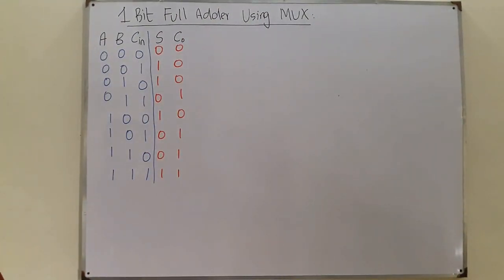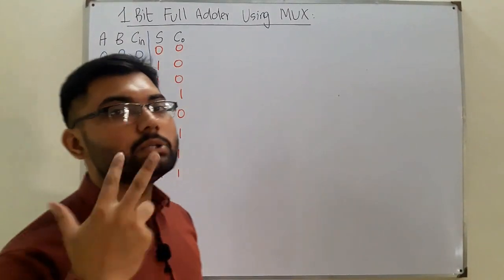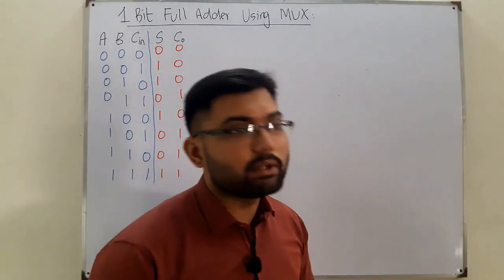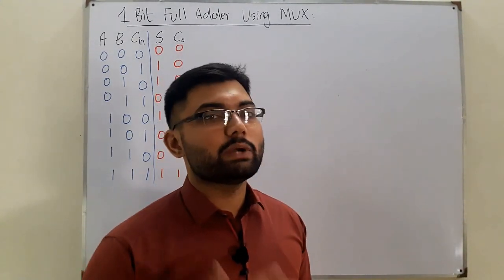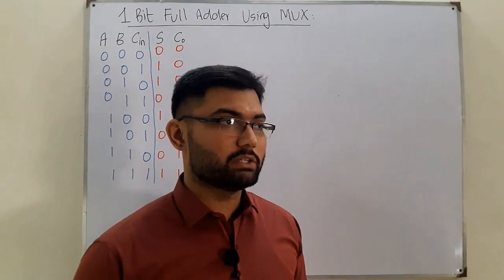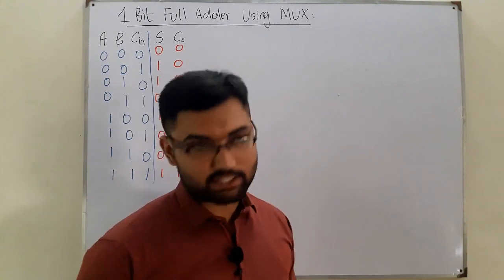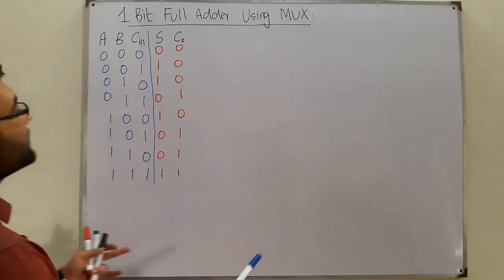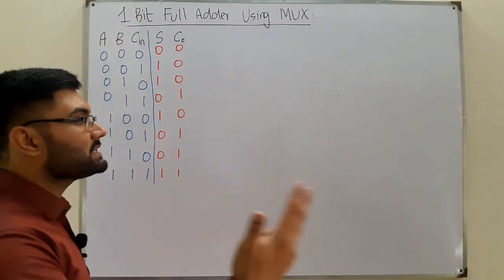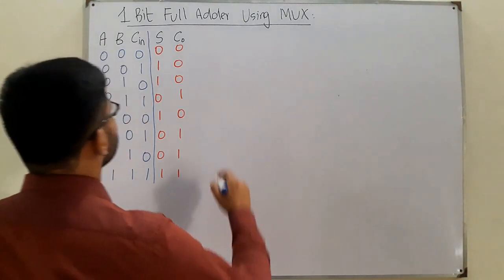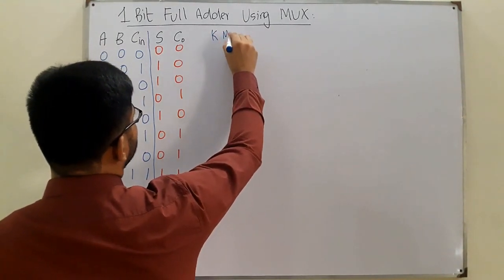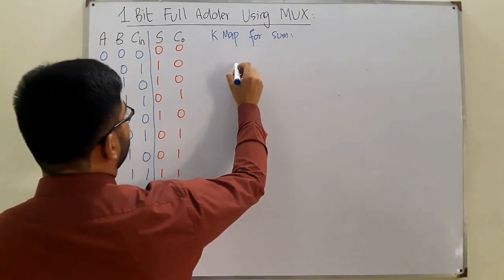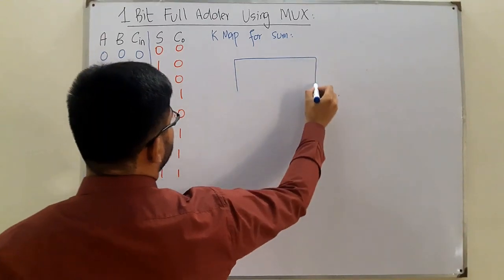We have two outputs: a sum and a carry. In previous videos we had only a single output, so we used a single multiplexer. In this case, with two outputs — sum and carry — we need two multiplexers. We have three inputs, so we need an 8-cell K-map. Let's start with the sum K-map, which has 8 cells.